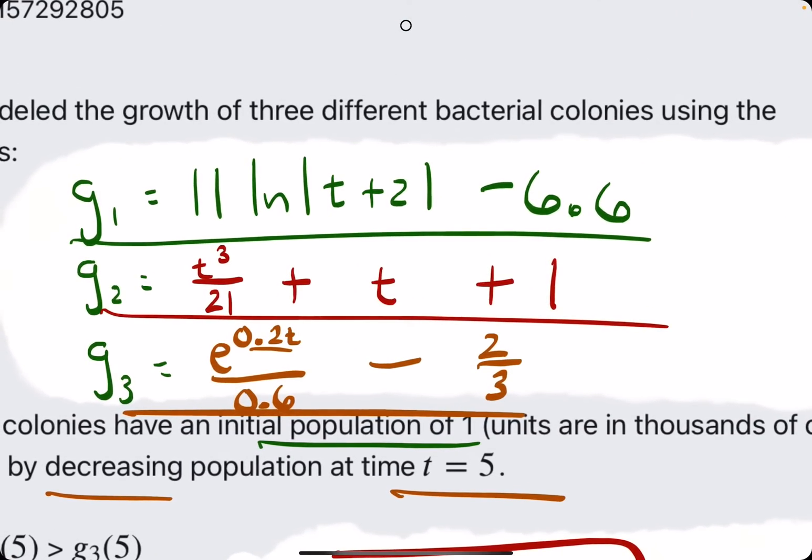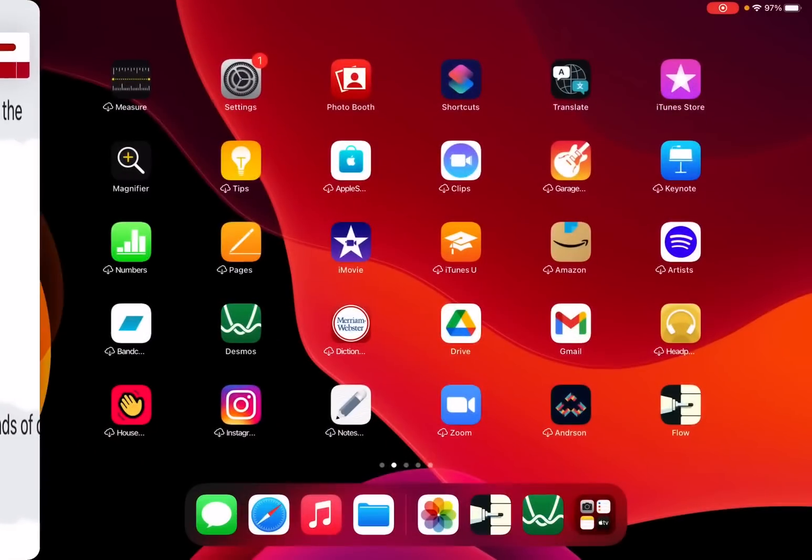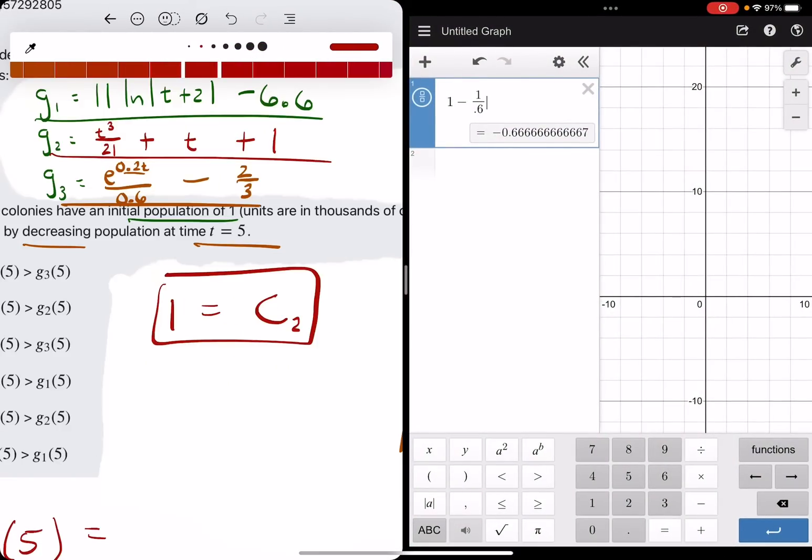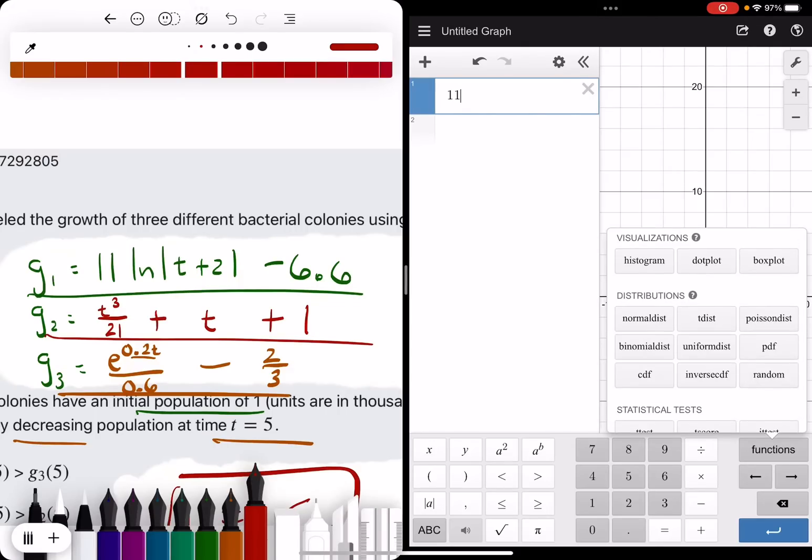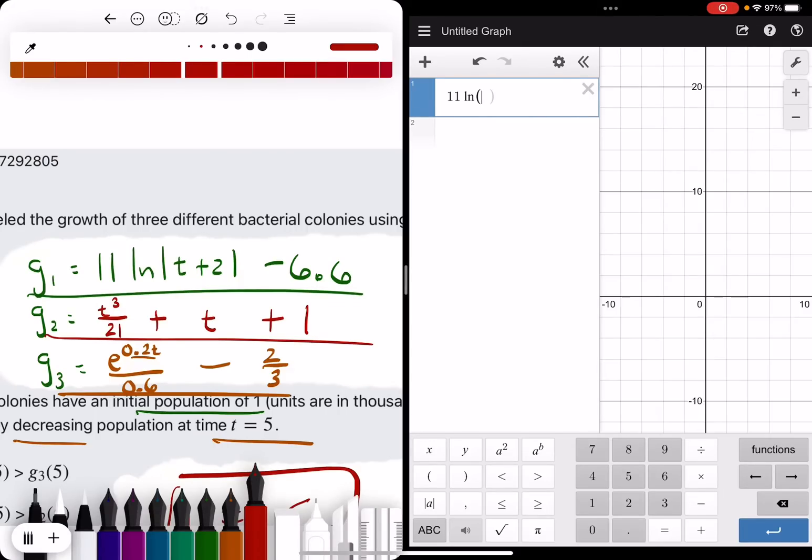Let's get a view on these three, and we'll split screen it with desmos, and we'll plug 5 in for t for all three of these as quickly as we can. 11 ln of 5 plus 2, which is 7, minus 6.6, we get 14.8.